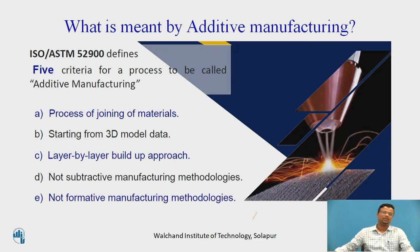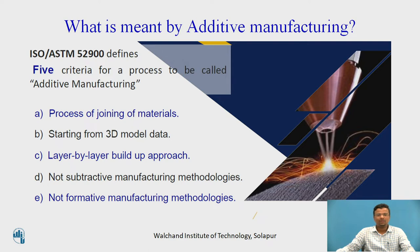In the last session we discussed what is meant by additive manufacturing. With respect to ISO 52900, additive manufacturing means joining the material. The material may be thermoplastic or may be metal. There is an advantage that dissimilar materials can be joined, unlike conventional processes like welding where we can't join dissimilar materials. The prerequisite for additive manufacturing is the 3D CAD model, which is the start of the data we provide to the additive manufacturing machine tool.